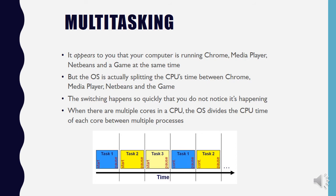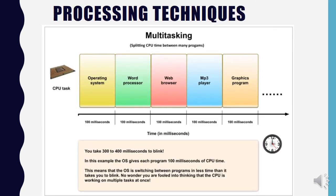If your CPU has multiple cores — such as a quad-core — the operating system can divide the CPU time of each core between multiple processes. An example of exactly how multi-tasking works: you see the CPU dedicating 100 milliseconds to the operating system, then to the word processor, then the web browser. This is an idealistic illustration, but it gives you the idea of how time-slicing works.